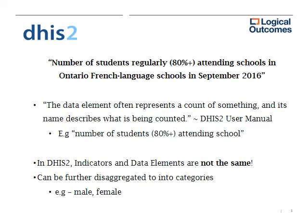If we were to look at the 'what,' that would be the data element. The DHIS 2 user manual states that a data element often represents the count of something. In our example, 'number of students regularly attending schools at 80% or higher' would be our 'what' — what we're counting. To keep the exercise simple, we're assuming that the calculation of 80% or higher has been done on paper prior to entering it into DHIS 2.